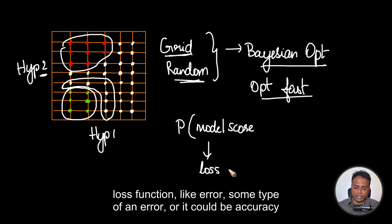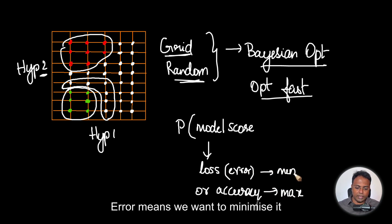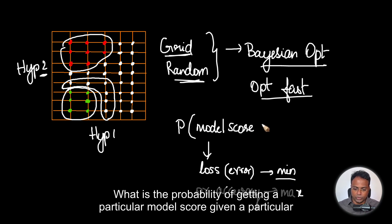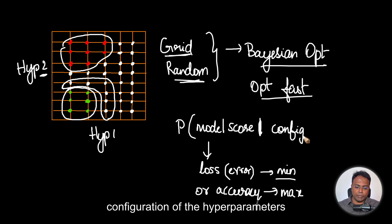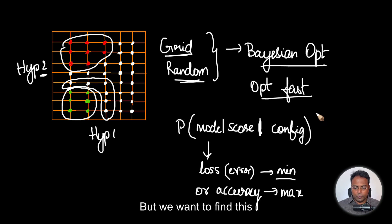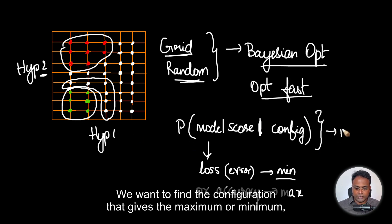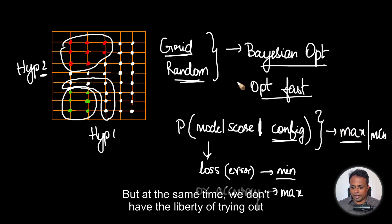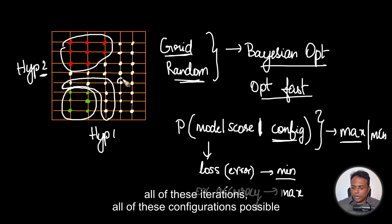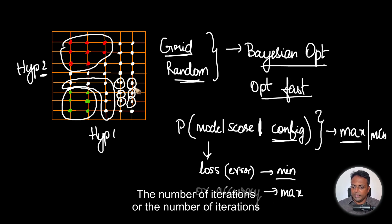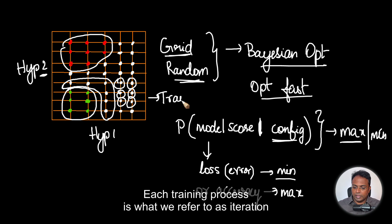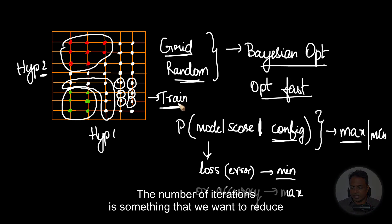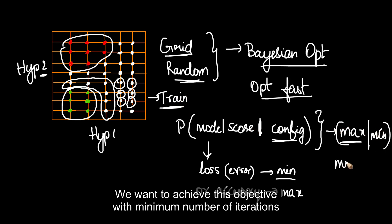What we are concerned about is finding the probability of getting a specific model score — this could be a cost function, a loss function like error, or it could be accuracy. Accuracy means we want to maximize it; loss function or error means we want to minimize it. So what is the probability of getting a particular model score given a particular configuration of hyperparameters? We want to find the configuration that gives the maximum or minimum depending on the objective, but we don't have the liberty of trying all possible configurations. The number of iterations — each training process — is something we want to reduce.